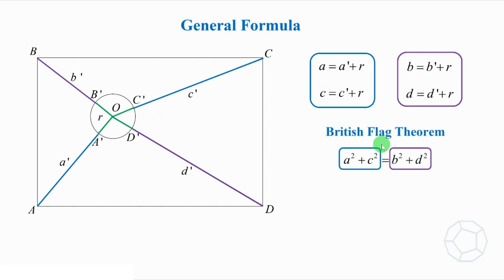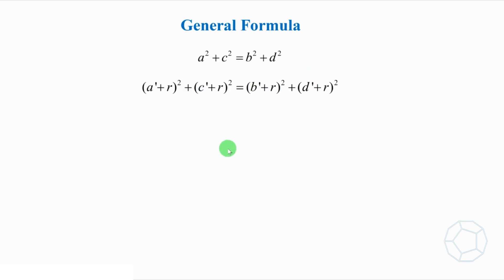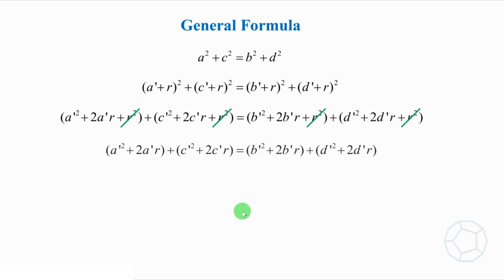Now, we can apply British Flag Theorem, putting all this into the equation like this. So the rest of the job is just algebra. We expand all the perfect square terms. To simplify the equation, we can cancel out 2r² on both sides.